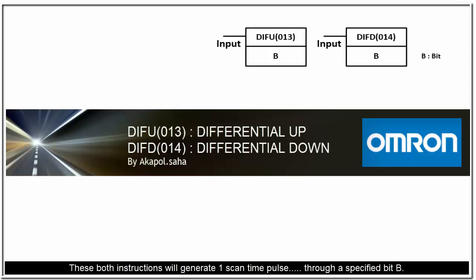These both instructions will generate one scan time pulse through a specified bit B. DIFU will generate one pulse when rising edge input, and DIFD will generate one pulse when falling edge input.